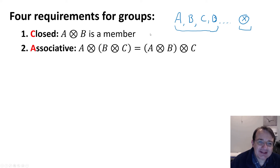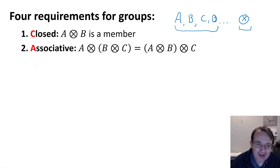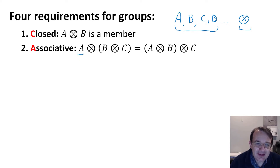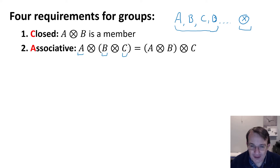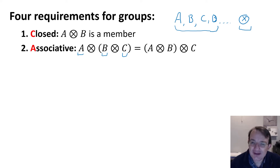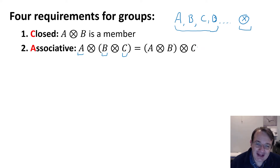The next property is that it has to be associative. So if I take elements a, b, and c from the group, then a operated on (b operated on c) has to equal (a operated on b) operated on c. So it has to be associative — that's the second requirement on groups.